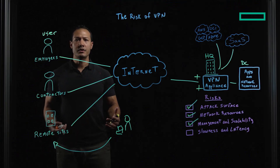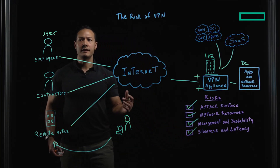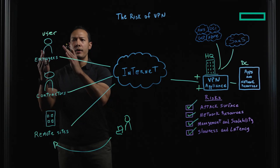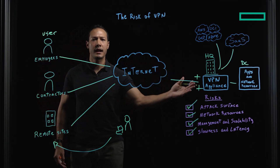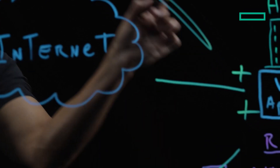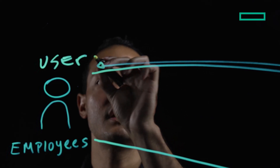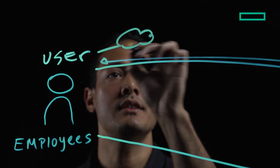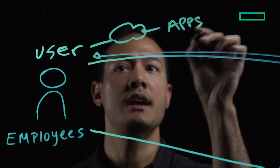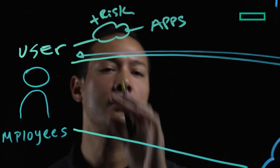VPN solutions also tend to be very slow. The reason is that the further away users are from the VPN appliance, the longer it takes traffic to go back and forth. This encourages users to use their own local internet to access business applications, which poses a risk for cybersecurity breaches.